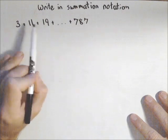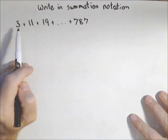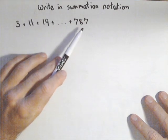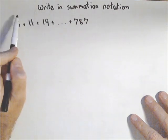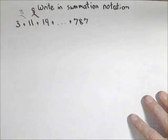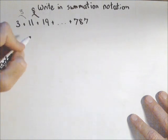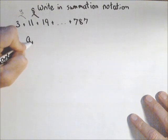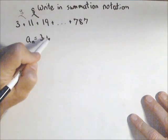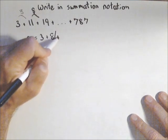The first one I'm going to start with is this series here: 3 plus 11 plus 19 and so on up to 787. What we see is we're going up by 8 each time, so it looks like we have an arithmetic series. So what we want to do is develop a formula for the general term. So a sub n is equal to 3 plus the common difference times n minus 1.